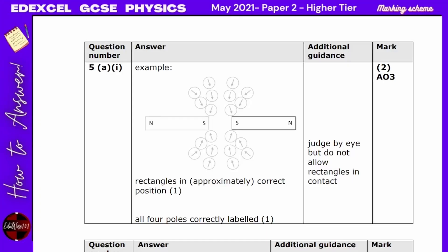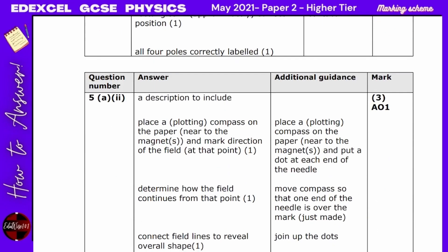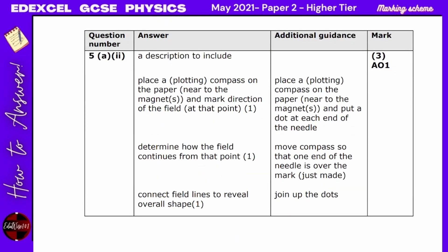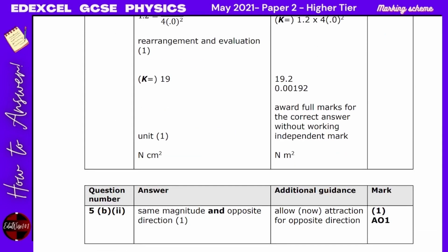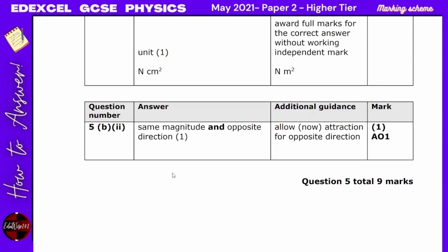For the marking scheme: the two facing ends of the bar magnets are both south poles. For Q5a part 2 — place a plotting compass on the paper, mark the direction of the field, determine how the field continues from that point, and connect field lines to reveal the overall shape. The value of k was 19 N·cm² and the force has the same magnitude but opposite direction.